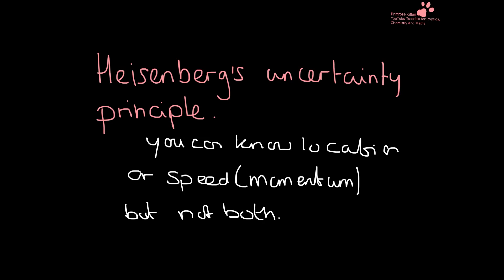Then we come across Heisenberg's Uncertainty Principle. Heisenberg's Uncertainty Principle says that you can know the location or the momentum of an electron, but you can never know both at the same time. So you can either know speed or you can know location, but you can't know both.